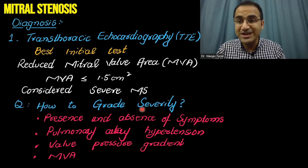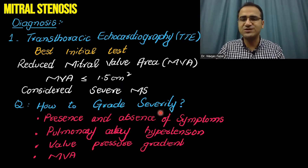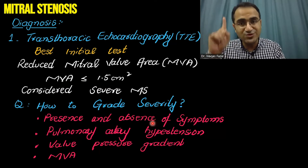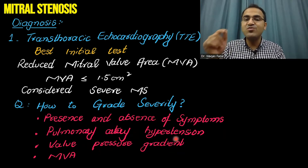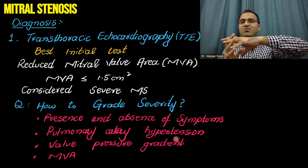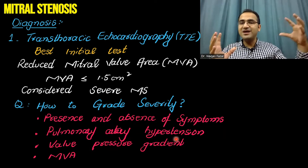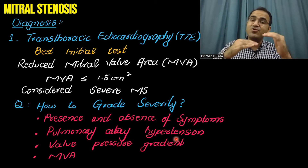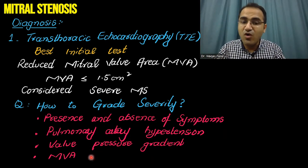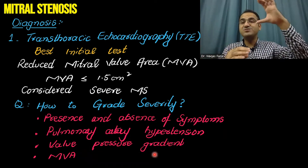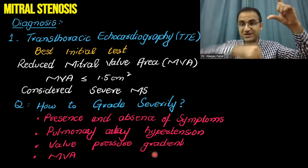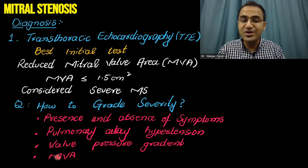How do you grade the severity of mitral stenosis? It's not just the circumference — it's also the presence or absence of symptoms as well as pulmonary artery hypertension, because the blood is being backed up in the lungs and there is pulmonary artery hypertension. Also considered are the wall pressure gradient — the difference between pressure of left atrium and left ventricle — and mitral valve area.